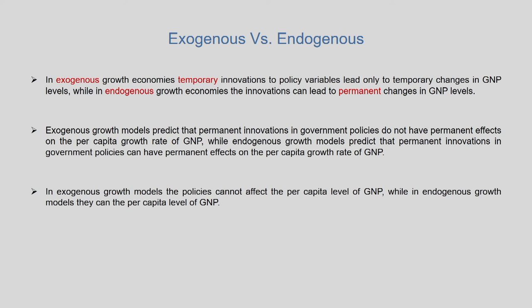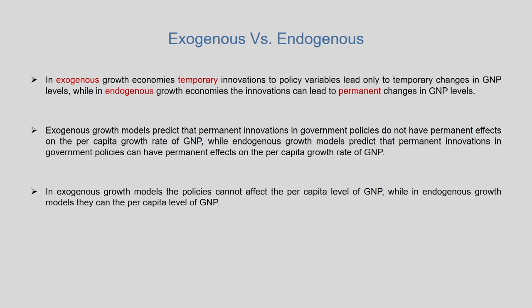To summarize the distinctions between exogenous and endogenous growth models: in exogenous growth economies, temporary innovations to policy variables lead only to temporary changes in GNP levels, while in endogenous growth economies innovations can lead to permanent changes in GNP levels, since endogenous models refer to institutional and structural changes which are long-run phenomena. Exogenous models predict that permanent innovations in government policies do not have permanent effects on per capita GNP growth rate, while endogenous models predict they can. In exogenous models, policies cannot affect the per capita level of GNP, while in endogenous models they can.